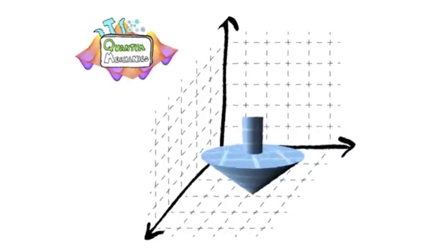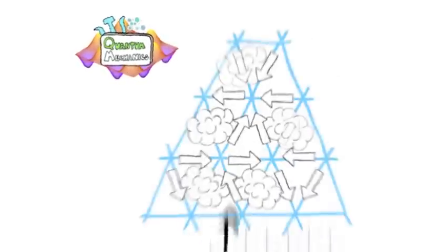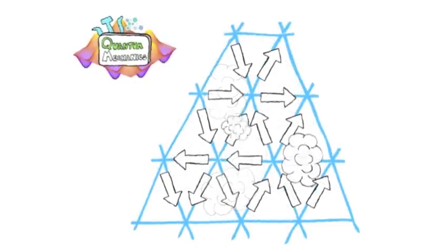Quantum spin, for example, isn't like spinning in the normal world. Quantum spin can change over time, but not in space.